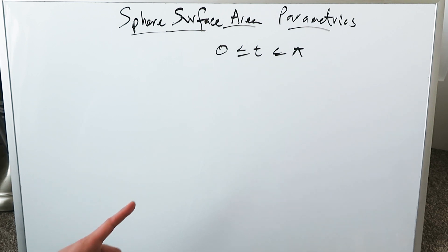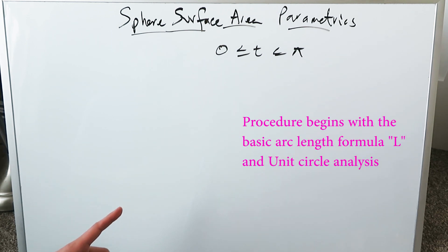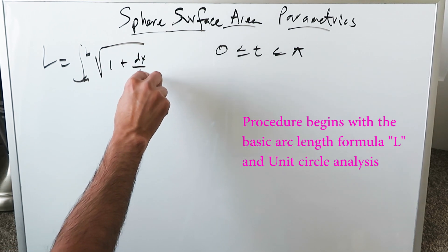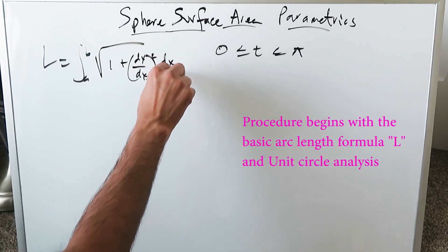The variable t will be that parameter. The third variable we will bring into the picture from 0 up to π. Square root 1 plus (dy/dx)² with respect to dx.